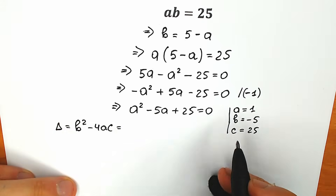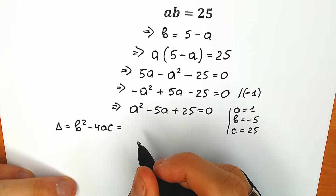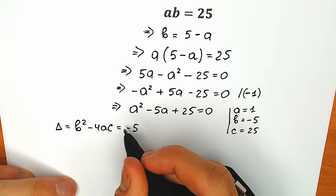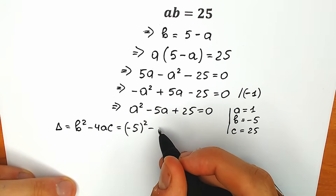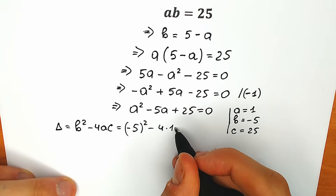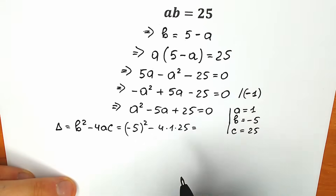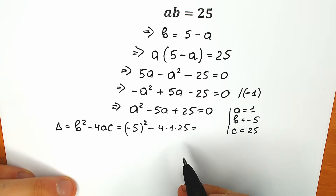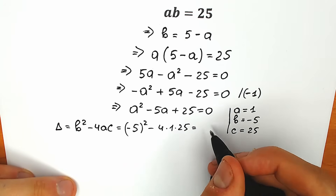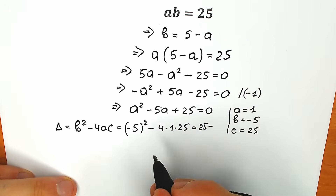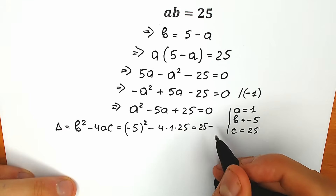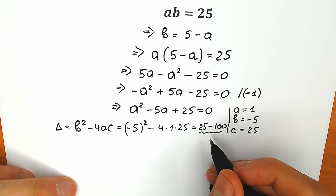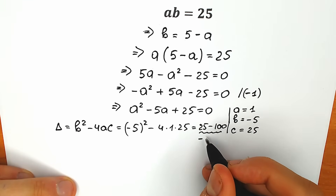Let's plug in each of these elements. So we have b equal to minus 5, so b squared equals 25, minus 4 times 1 times 25 equal to 100. So 25 minus 100 equals minus 75. So our discriminant is equal to minus 75.